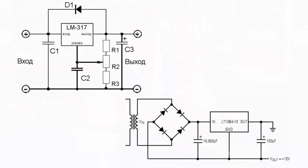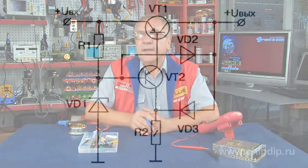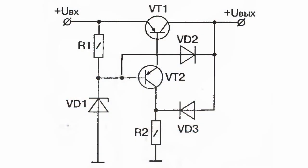So we are left with only one option: we will build a stabilizer using discrete components. The stabilization factor of the stabilizer is 30 to 50.